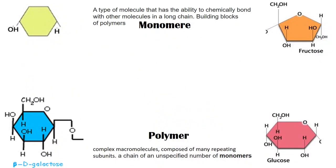Let us distinguish between what is a monomer and a polymer. In order to create a macromolecule — a compound or substance — a monomer is a building block. A monomer is a type of molecule that has the ability to chemically bond with other molecules in a long chain.